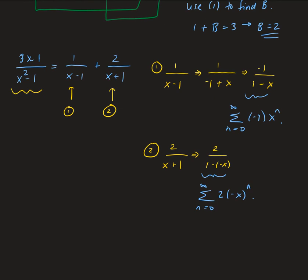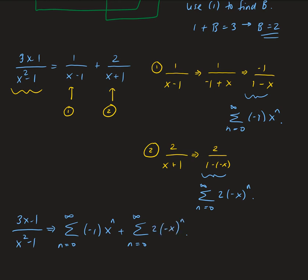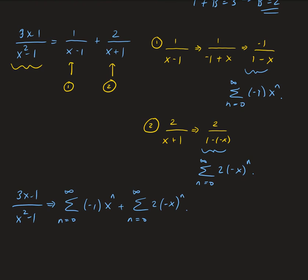So for our function (3x - 1)/(x² - 1), we have, in terms of the series, from the first part we had (-1)·xⁿ, and from the second part we have 2·(-x)ⁿ. The radius of convergence for each is |x| < 1, that is, x between -1 and 1.